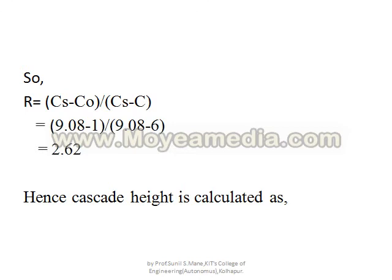Now for the calculation, we first calculate R. The saturated concentration of oxygen is 9.08 mg/L, the initial concentration in the raw water is 1 mg/L, and the required concentration is 6 mg/L. Even if the required value is not explicitly given and the problem asks to design a safe cascade aerator, you should take 6 mg/L or more. Using the formula, R comes out to be 2.62.